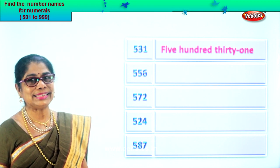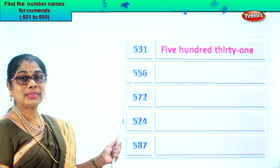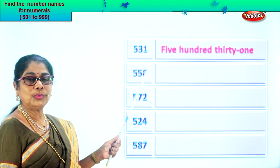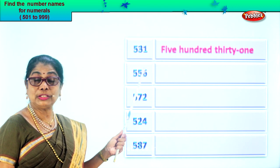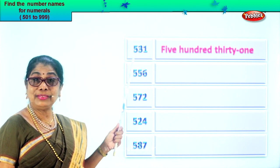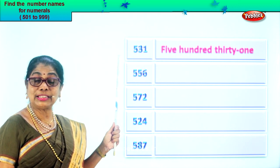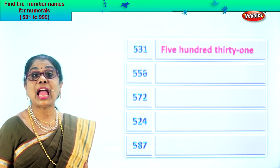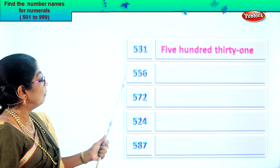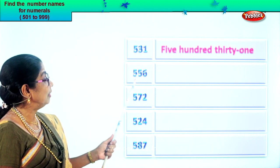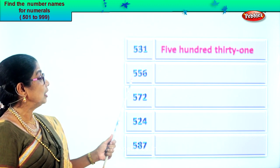Is it easy? Good. Now here you have six in the ones place, five in the tens place and five in the hundreds place. Let's read: five hundred fifty-six.